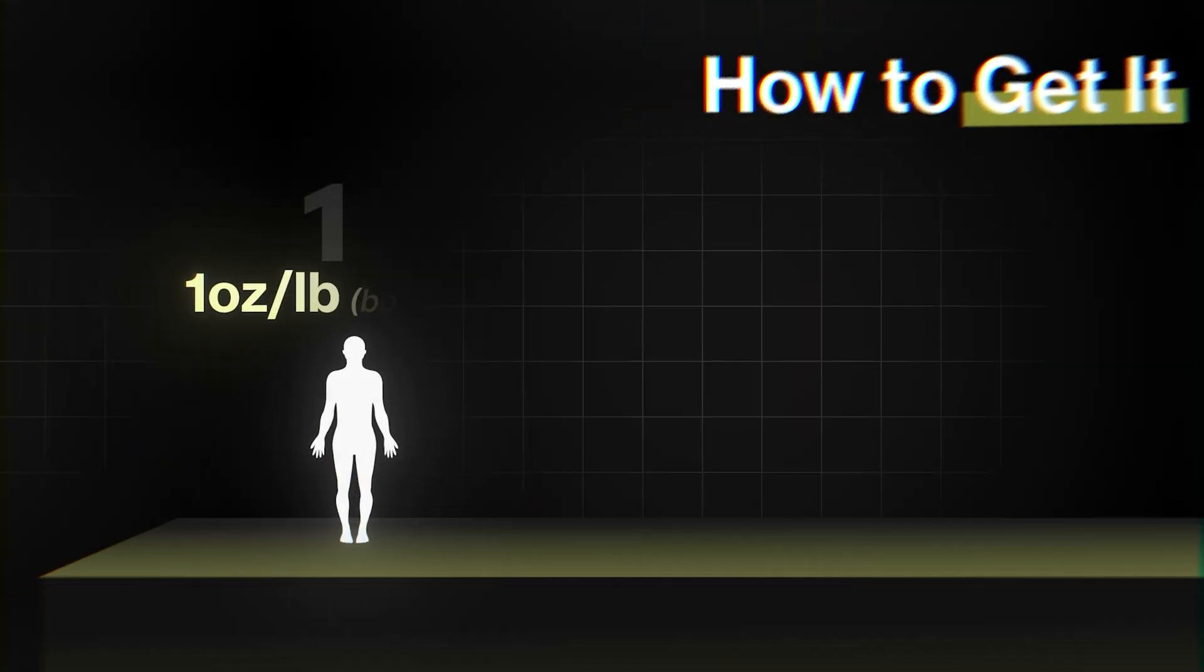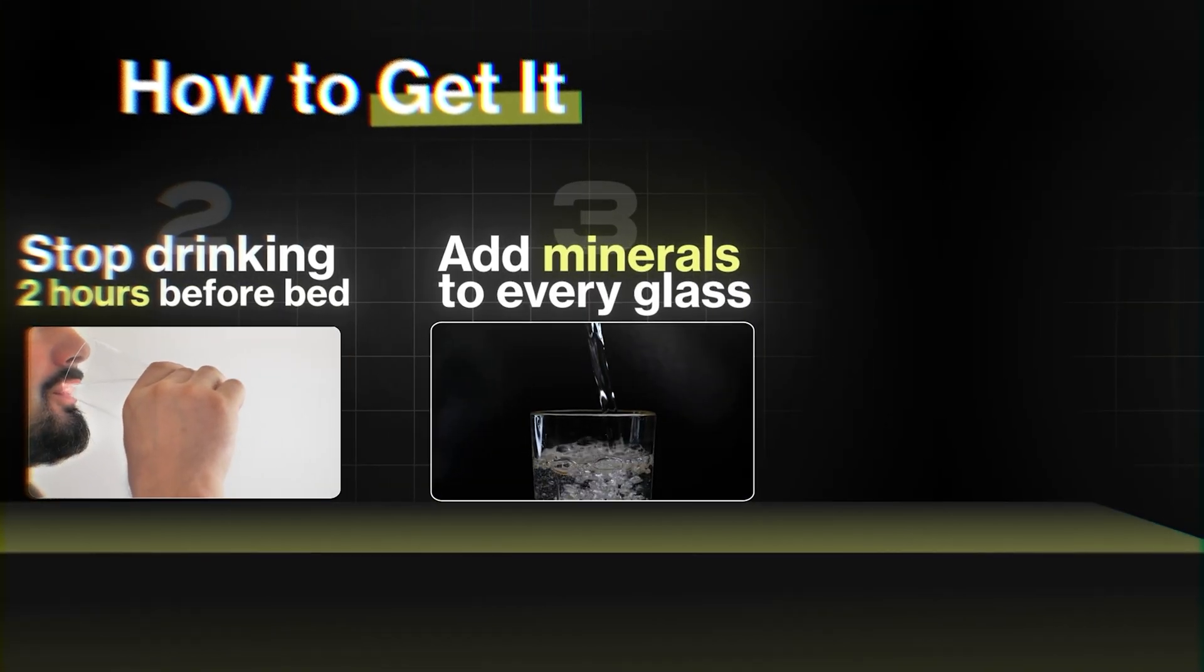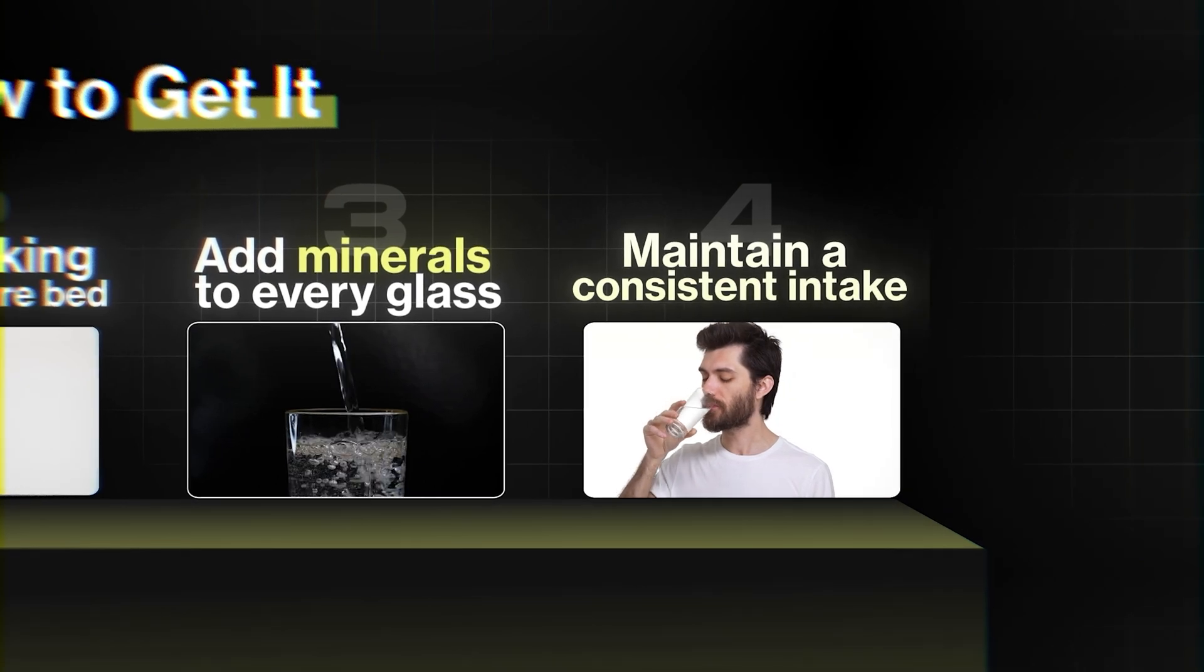How to get it? One ounce of water per pound of body weight daily. Stop drinking two hours before bed. Add minerals to every glass. Maintain a consistent intake.